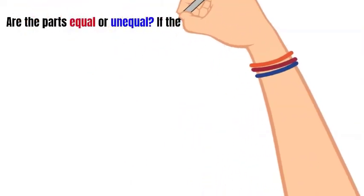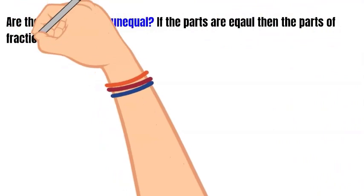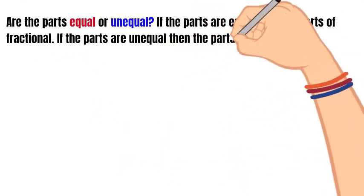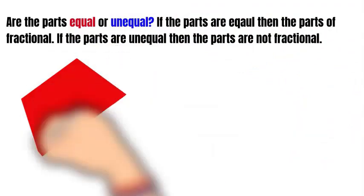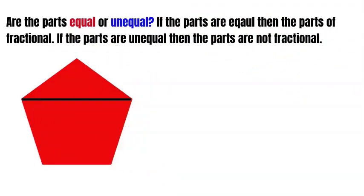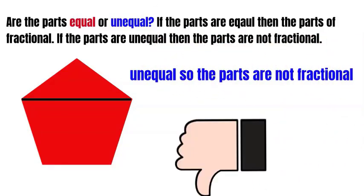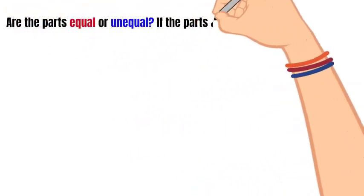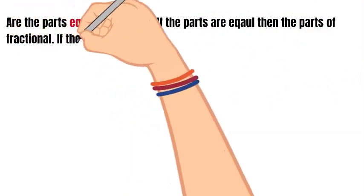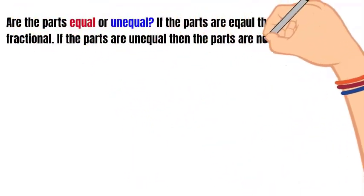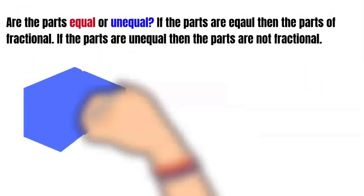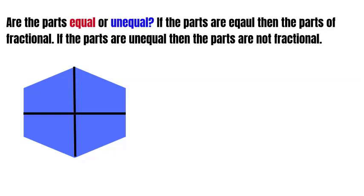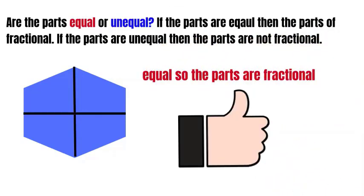So are the parts equal or unequal? If the parts are equal, then we say it's fractional — it's a fractional part. If the parts are unequal, then the shape is not fractional. In this case, the parts are not equal, so it's not fractional. If the parts are equal, the parts are fractional. I can see these parts look exactly the same — they're the same shape and the same size, so they are equal and the parts are fractional.